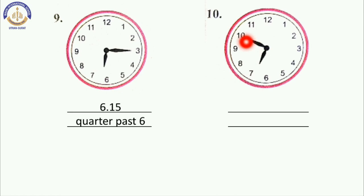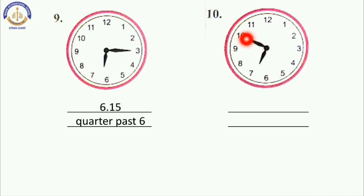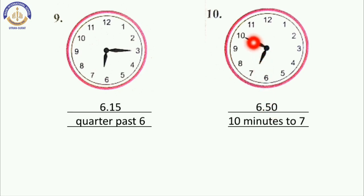Here the minute hand is on 10 and the hour hand is between 6 and 7. So the time is 6:50. And this hand is on the left side, so the time is to. So, 10 minutes to 7. Very good children.